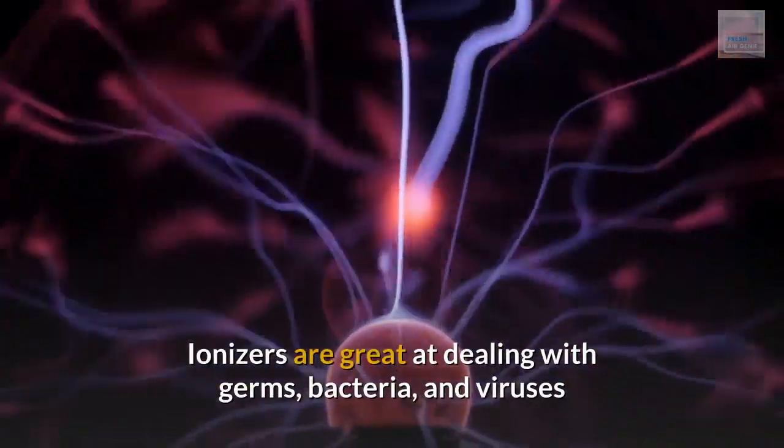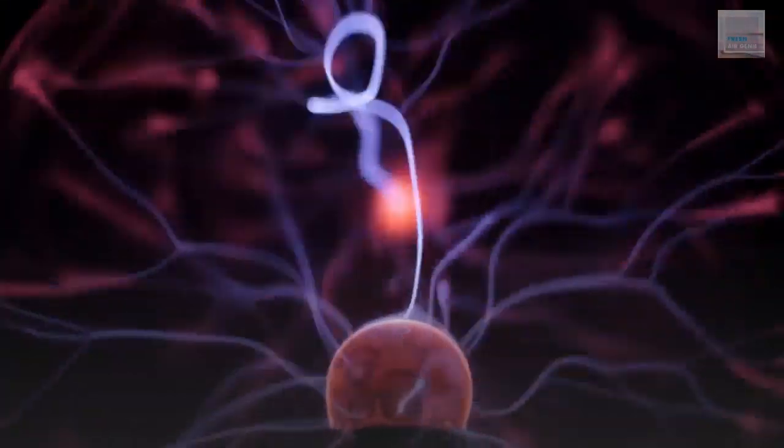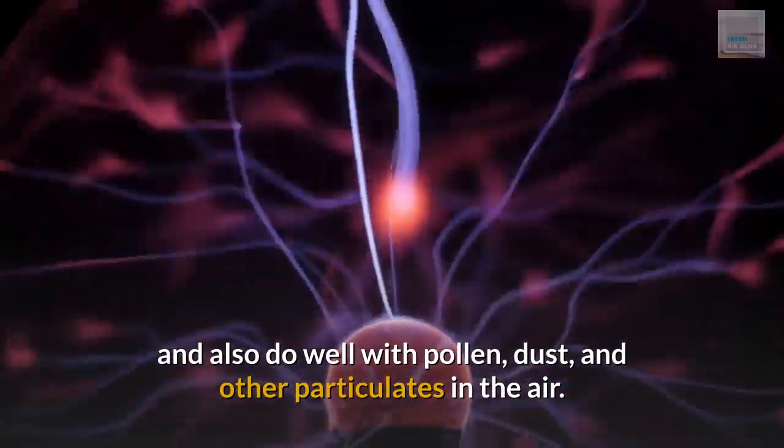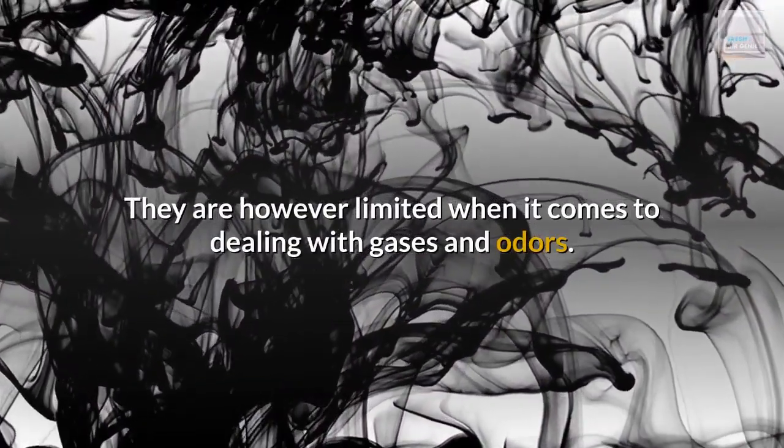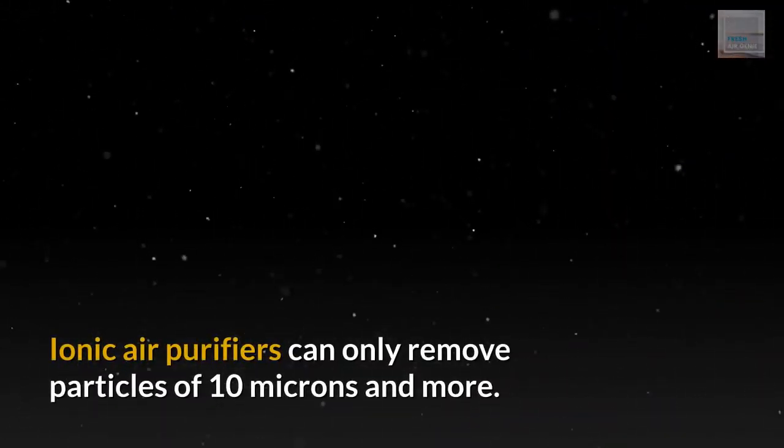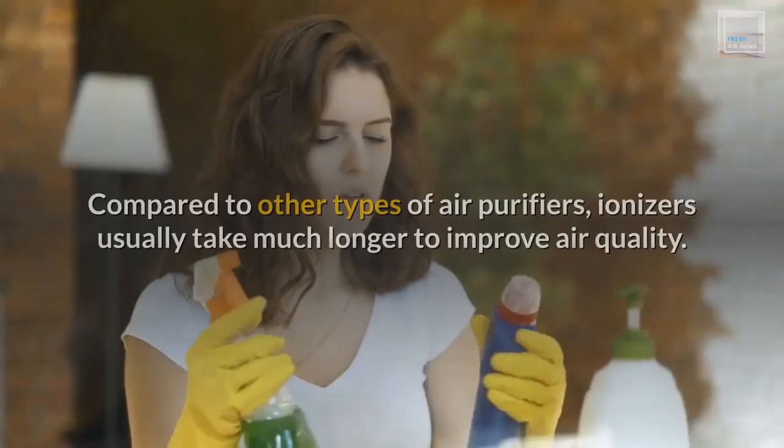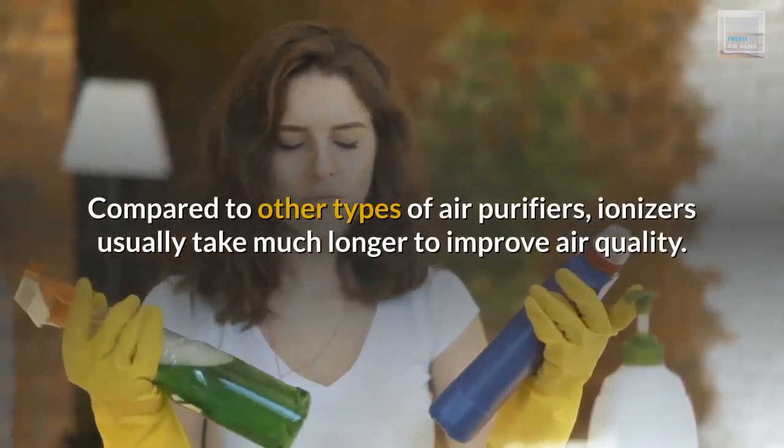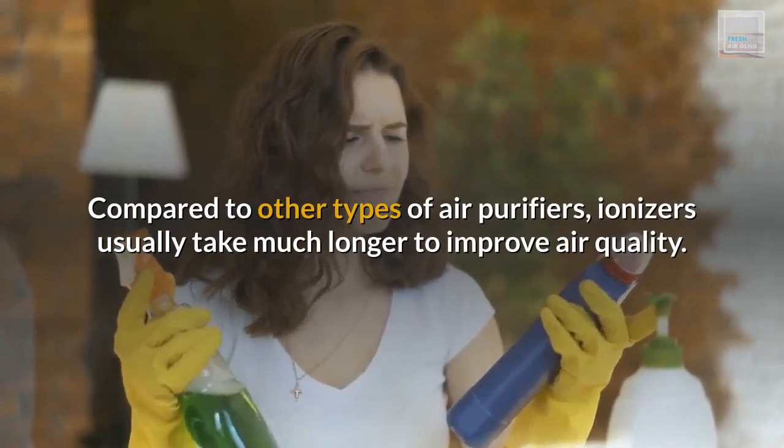Ionizers are great at dealing with germs, bacteria, and viruses and also do well with pollen, dust, and other particulates in the air. They are however limited when it comes to dealing with gases and odors. Ionic air purifiers can only remove particles of 10 microns and more. Compared to other types of air purifiers, ionizers usually take much longer to improve air quality.